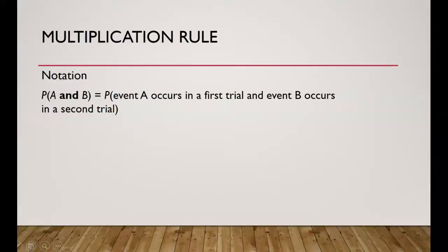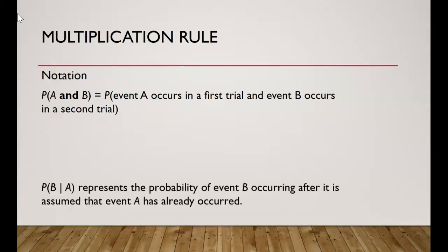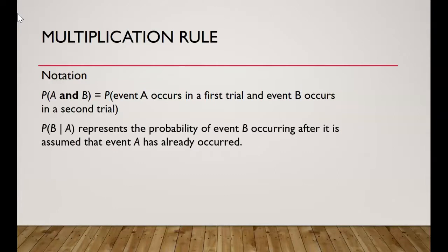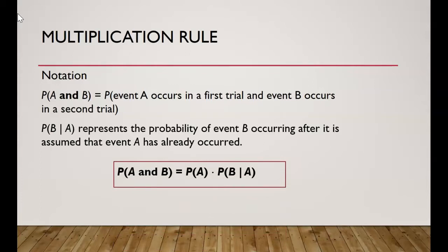We will now learn about the multiplication rule of probability. Multiplication is notated as AND in statistics. P(A and B) represents the probability that event A occurs in one trial and event B occurs in a subsequent trial. P(B|A) represents the probability of event B occurring given that event A has already occurred. The formula is: P(A and B) = P(A) × P(B|A).